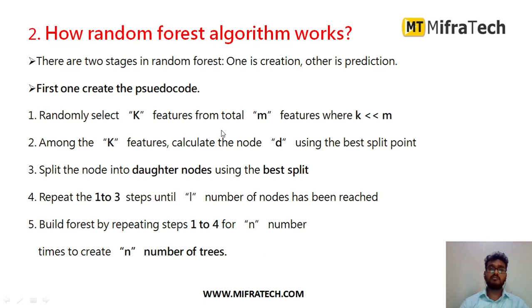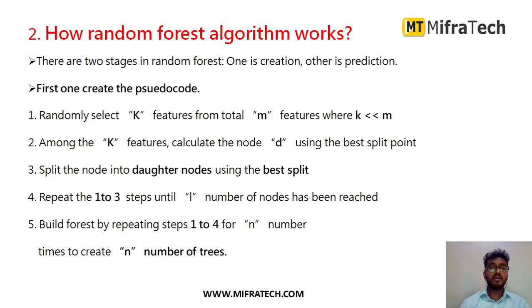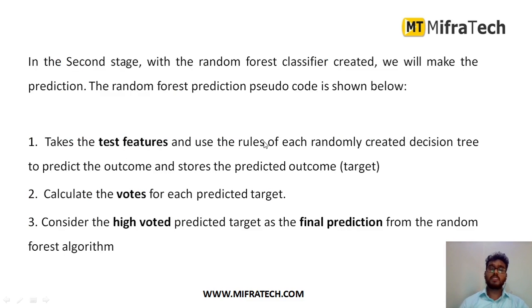Random Forest works in two stages. In the first stage, it randomly selects k features from a total of m features. From the given dataset it takes a subset of features — less than the total number of features — and among them assigns some as nodes and some as branches depending on feature importance, then creates decision trees. In the second stage, after creating the decision trees, we give test features to each tree. Each tree predicts an output, those outputs are stored, votes are calculated for each predicted target, and the highly voted predicted target is taken as the final prediction.